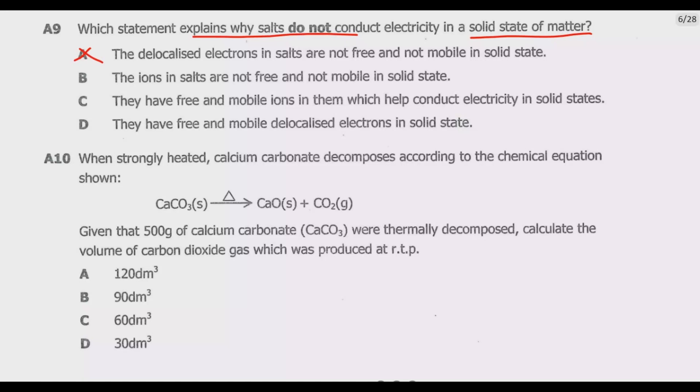Then B - the ions in salts are not free and are not mobile in a solid state. So you see the ions, so B should be correct. But let us confirm C - they have free and mobile ions in them which help conduct electricity in a solid state. This is not correct. The question is telling us why they do not conduct electricity, but this one is talking about conducting electricity. D - they have free and mobile delocalized electrons in a solid state. This is for metals, so D is incorrect. B is the correct answer.